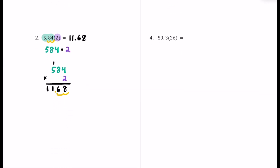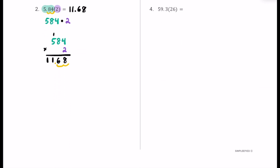For number four, we're going to take 59.3 — 59 and 3 tenths — and multiply it by 26. We ignore the decimal and think of this as 593 for our standard algorithm. Then we multiply by 26, which is a whole number. The number with more digits is 593, which goes on top. We multiply by 26, which has less digits, and put that on the bottom, lining up the place values.